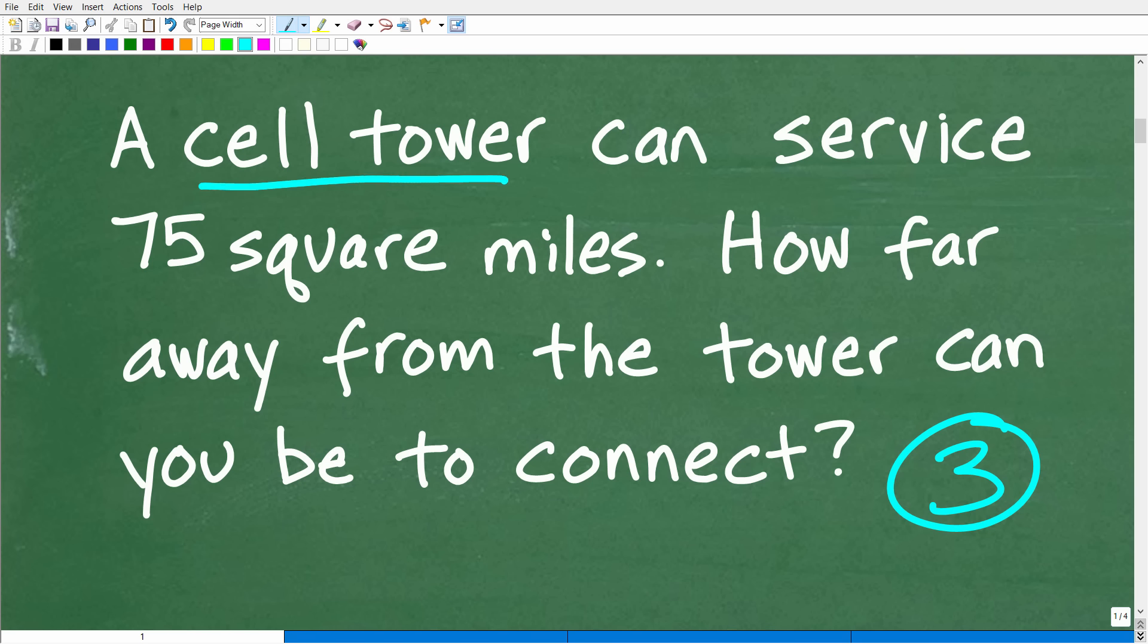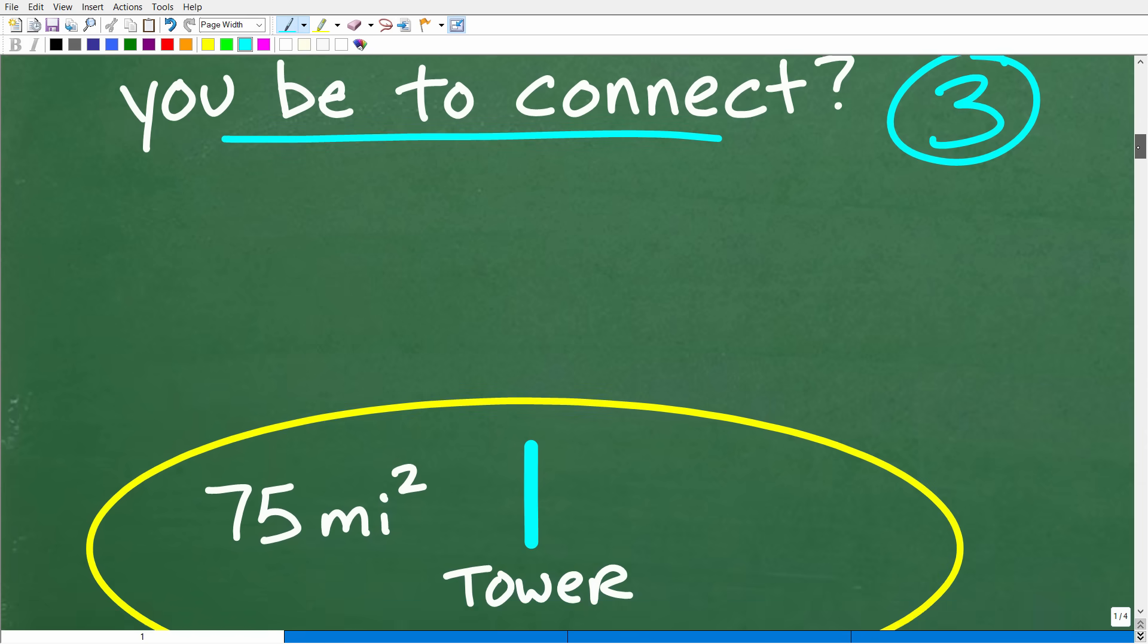Okay. So we have this cell tower, right? And it can service 75 square miles, right? And now the question is how far away can we be and still pick up a signal more or less from the tower? Now I'm kind of paraphrasing, but that's effectively what the problem is saying. So we need to kind of think about this problem visually.